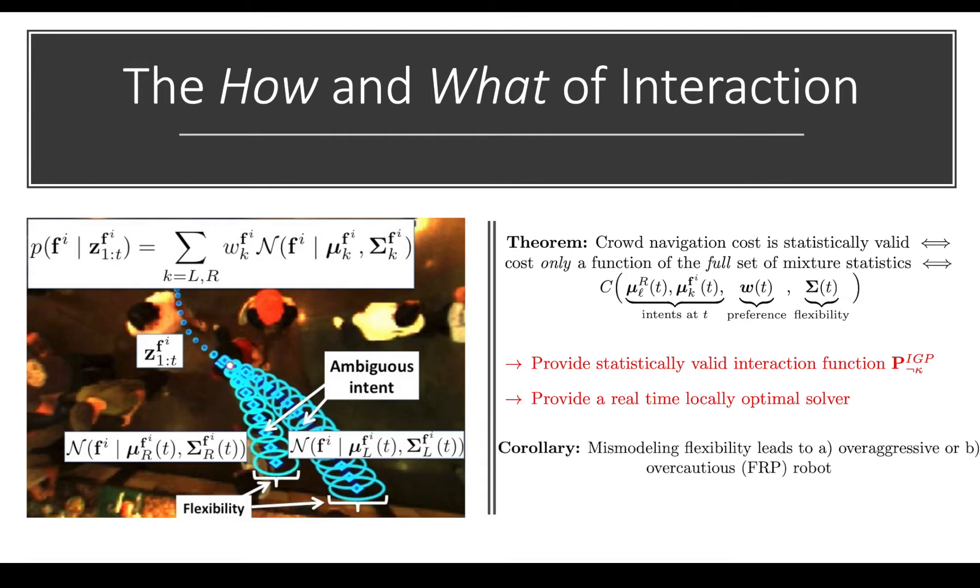A corollary to this theorem is that mismodeling flexibility leads to over-aggressive or possibly over-cautious behavior. And we'll see that in a minute in our empirical runs, what over-aggression or over-cautiousness looks like. But essentially, this can be understood intuitively by saying that mismodeling flexibility can cause you to be overly forceful or think that the person's not going to move out of your way.